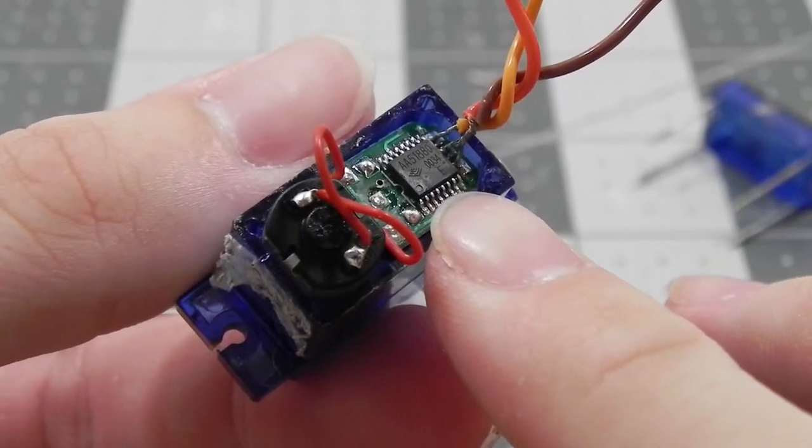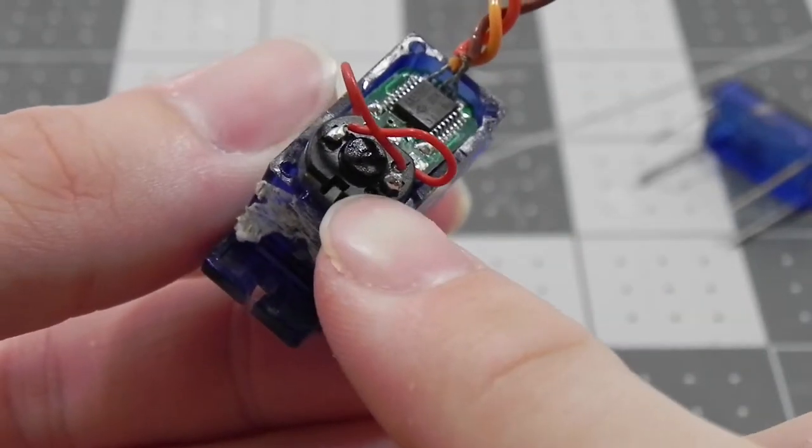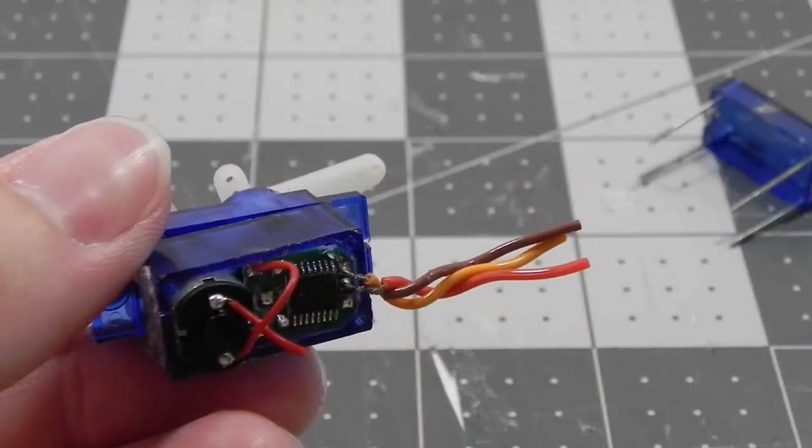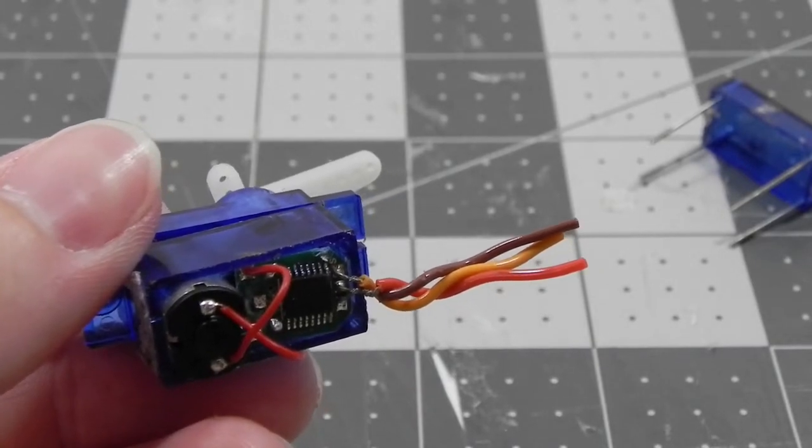There's the control board that relays the signals to the motor, and then there's the actual motor for the servo. We should be able to prop up the control board using a small flathead screwdriver.